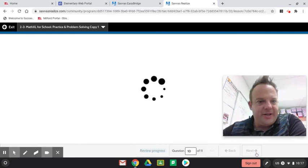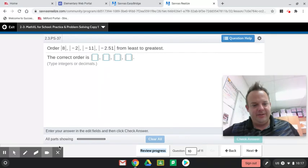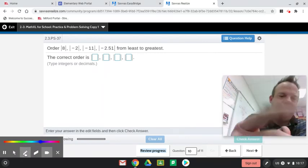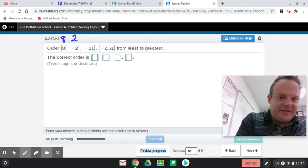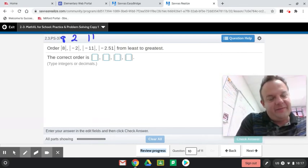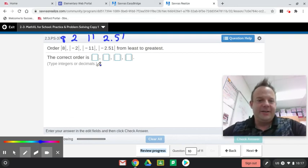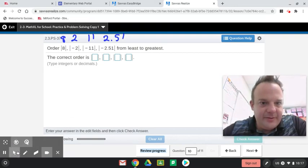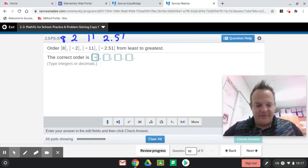And hopefully, you're just following right along with me. As we do this on your Envision 2.3, practice on problem solving. Now, least to greatest. Absolute value of 8 is 8. Absolute value of negative 2 is 2. Absolute value of negative 11 is 11. Absolute value of negative 2 and 51 hundredths is 2 and 51 hundredths. Least to greatest.